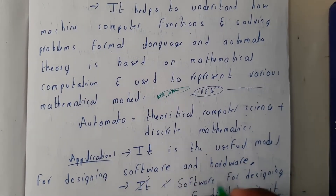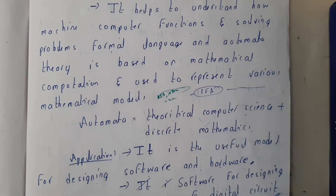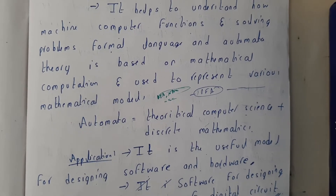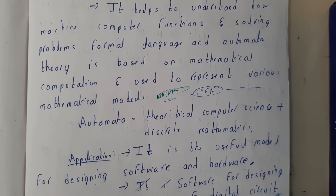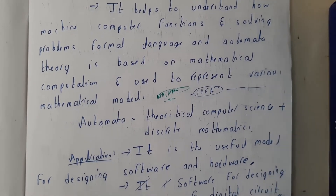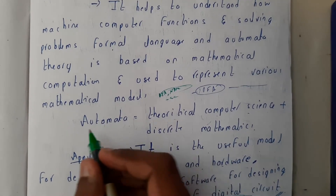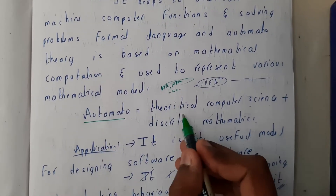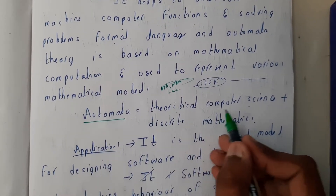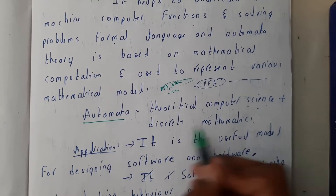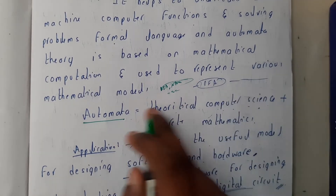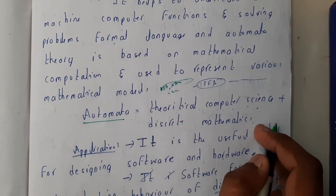We also have the concepts of grammar — not English grammar, but a type of grammar used by compilers in compiler construction and many other things. Basically, automata is theoretical computer science plus discrete mathematics. It is a combination of theory and structures.